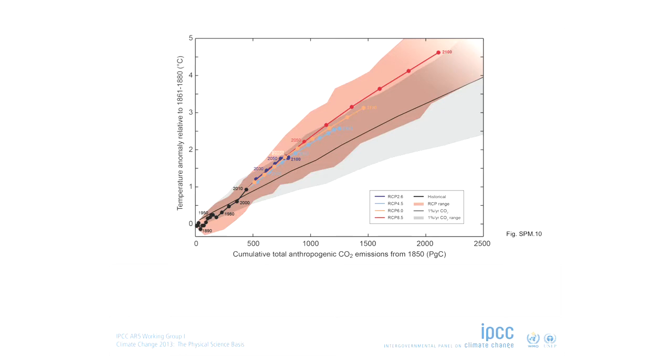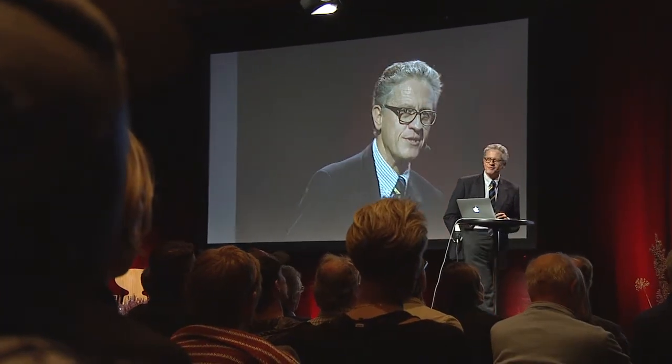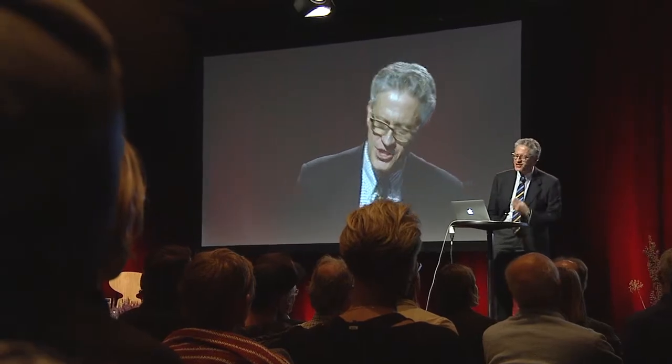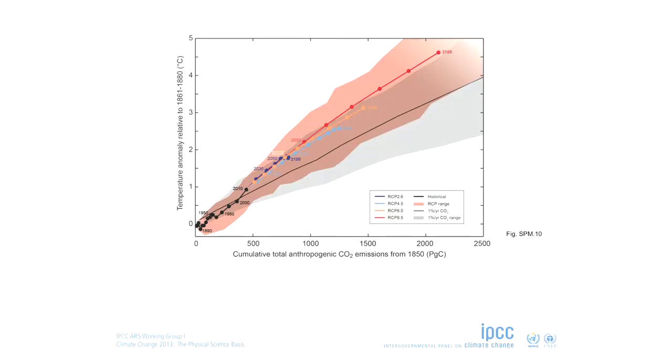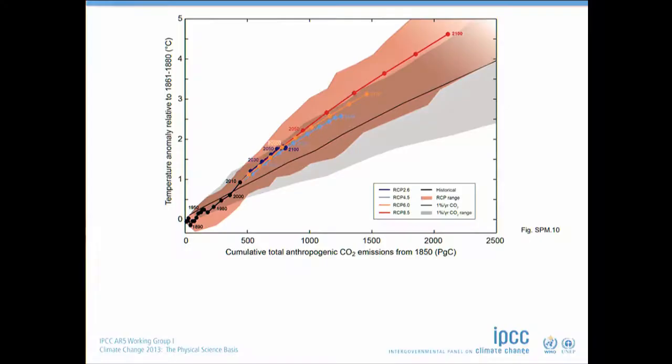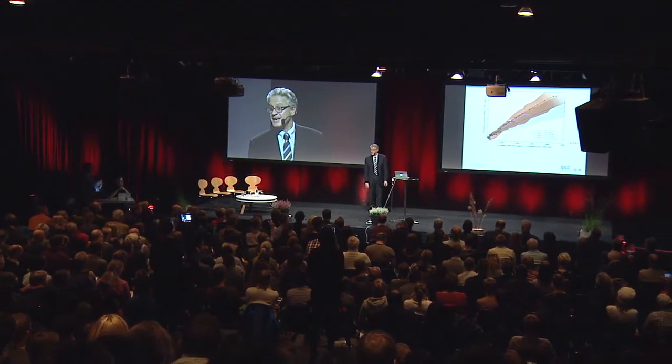The units are obscure — we were told by the governments: petagrams of carbon. We then had to change that after about 20 minutes of discussion. In the end we said, okay, let's go to the old unit you are familiar with — the gigatons that the governments prefer. We prefer the petagrams, but that's not relevant. It is the same number.